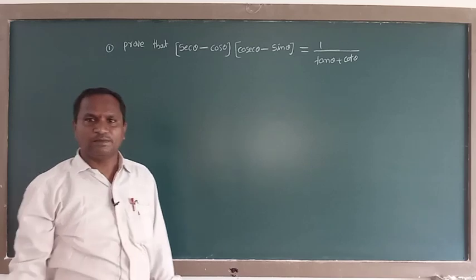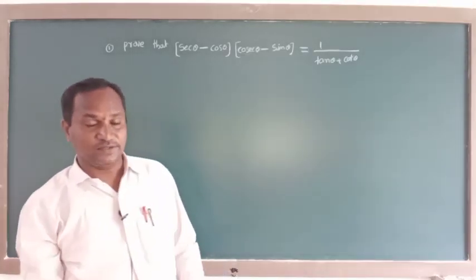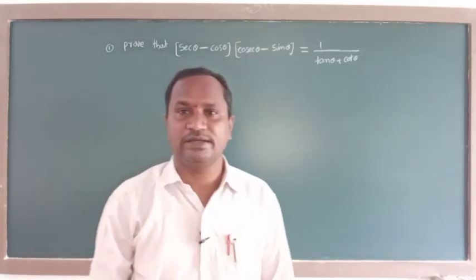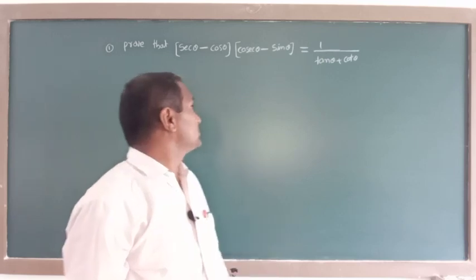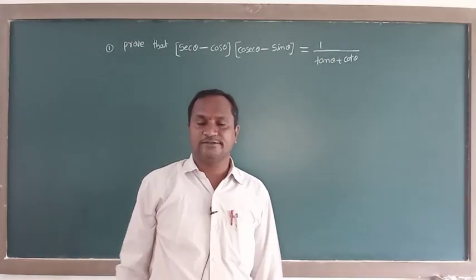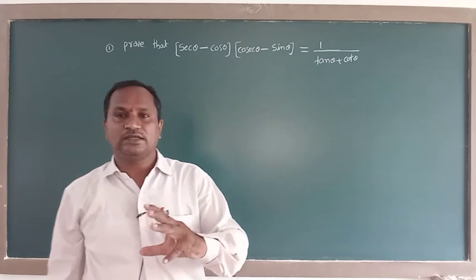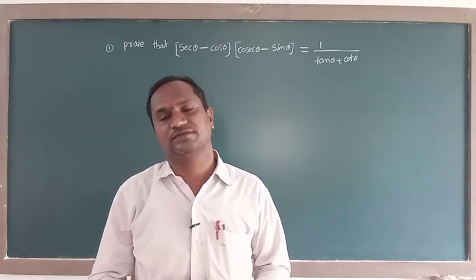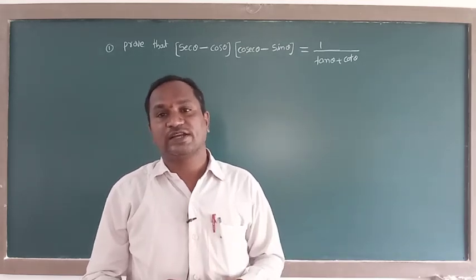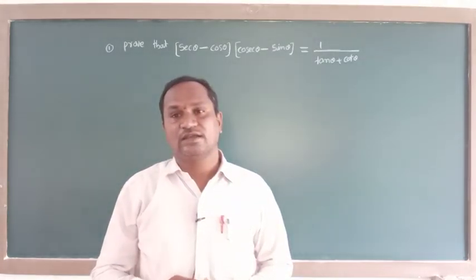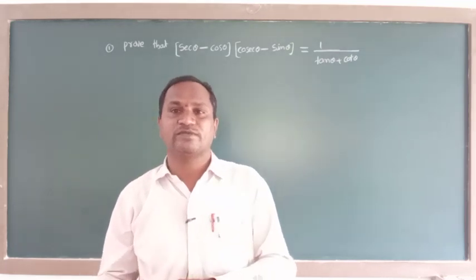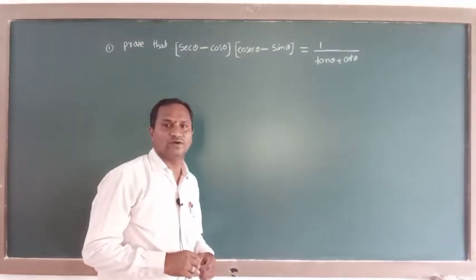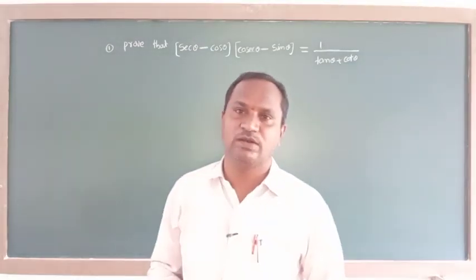The right-hand side is 1 by tan theta plus cot theta. In the left-hand side part, they gave the function secant theta minus cos theta, into cosecant theta minus sin theta. Here we have to apply the reciprocals of the functions. Reciprocal of cos becomes secant, and reciprocal of secant becomes cos.